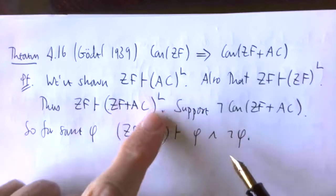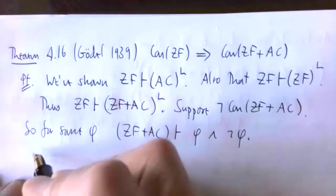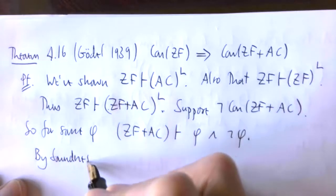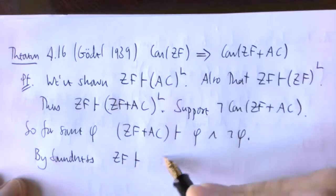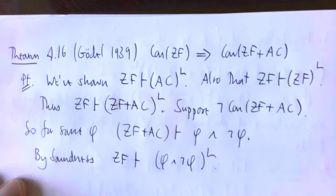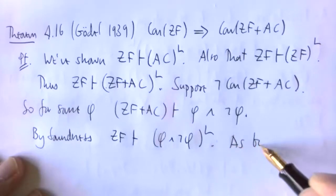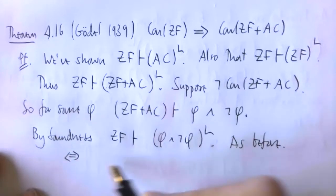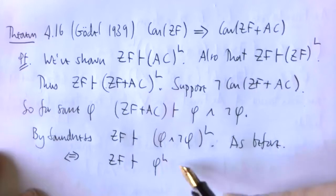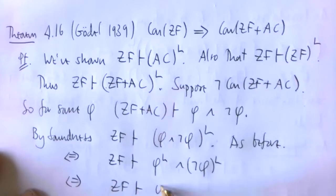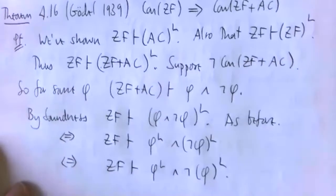All of these axioms that are needed to derive this contradiction are true in L. So if all these hypotheses are true in L, anything I can deduce from them is true in L. And now it's exactly as before, it's just plain sailing. This is equivalent to ZF proving phi holds in L and not phi holds in L. And this is just definition of relativization. So I've got a statement and its negation has been proven from ZF alone.